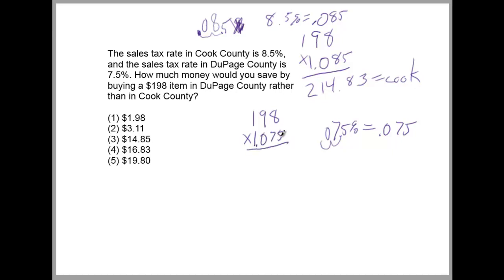Now all I need to do is find the difference between these two. $212.85 minus $214.83 is $1.98. So you would save $1.98 by buying the item in DuPage County.